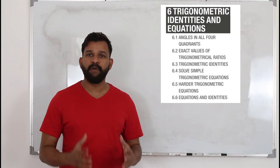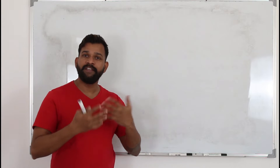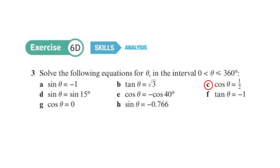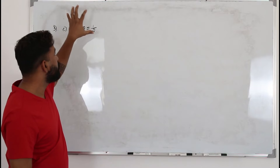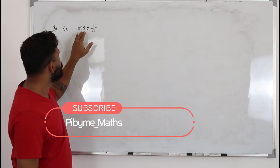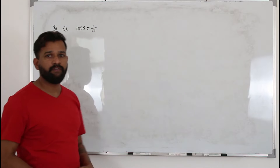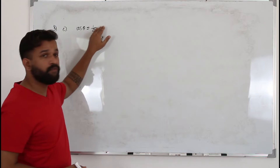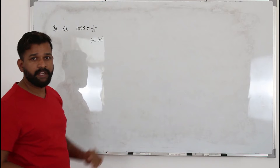Today we are going to learn topic 6.4: solving simple trigonometric equations. If you are given an equation involving a trigonometric function, for example from exercise 6D, look at this equation: cos θ equals one half. They want you to solve this equation. Keep your calculator in degree mode and find θ = cos⁻¹(1/2). Cos inverse of one half will be 60°. That means theta is 60 degrees — that's the solution of this trigonometric equation.